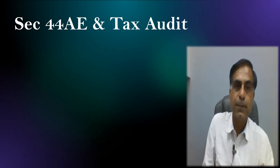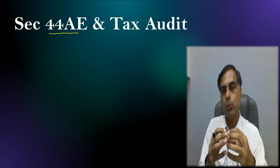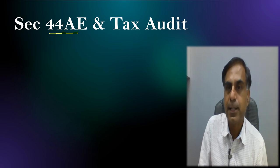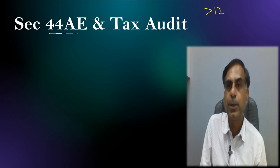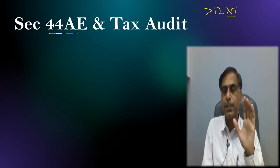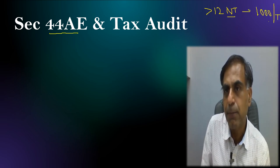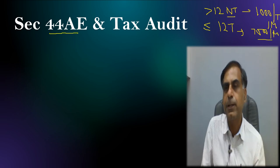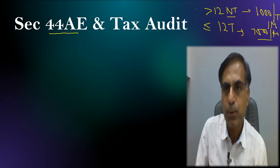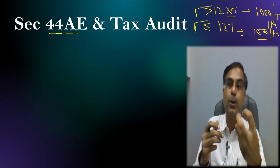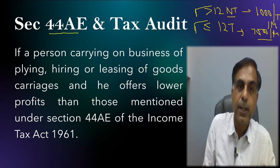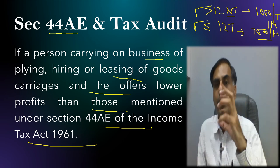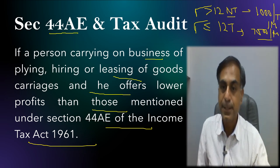There is one more presumptive taxation section — section 44AE. If you are a person in the business of owning, hiring, or leasing goods carriages, you may offer your income on a presumptive basis. If your goods carriage has more than 12 tonnes capacity, you must offer Rs. 1,000 per tonne per month. If the vehicle is up to 12 tonnes capacity, Rs. 7,500 per month per vehicle is to be offered as income. If you wish to claim that your actual income is lower, then you are liable to get your books of account and documents audited.